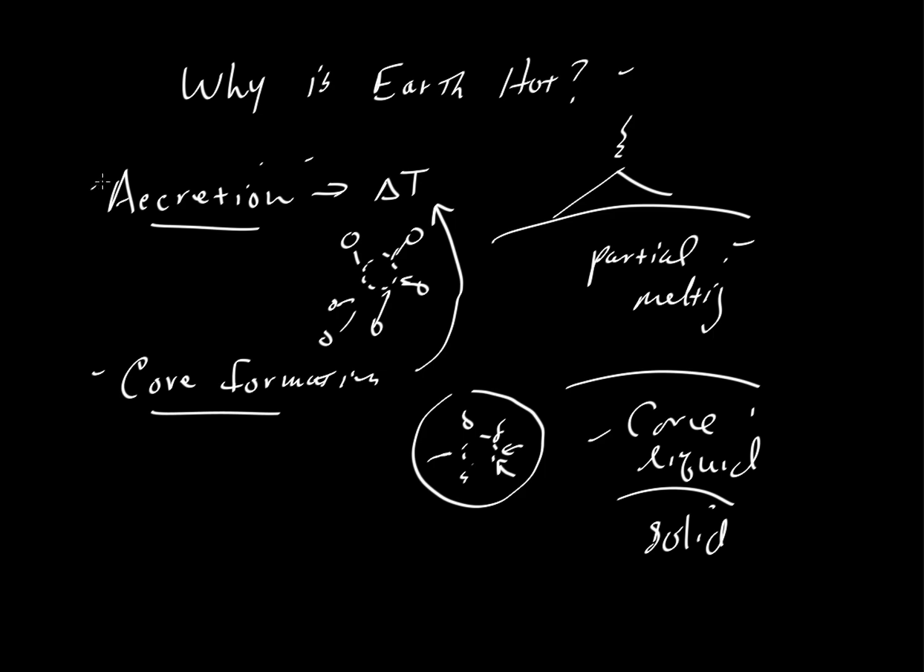So accretion and core formation, the fact that we have a metallic core that's segregated from the rest of the planet, that accounts for at least some of the heat inside of Earth. Then there is radioactive decay. We have lots of radioactive elements, but a few.